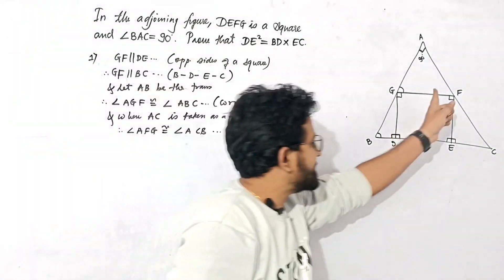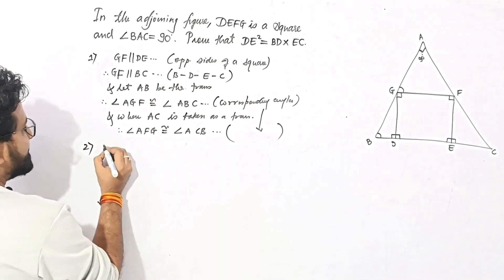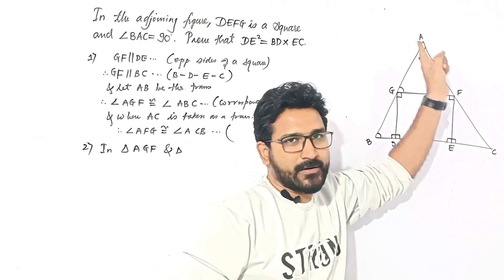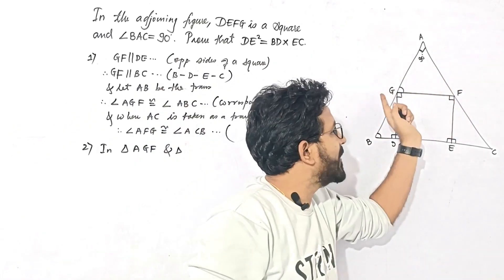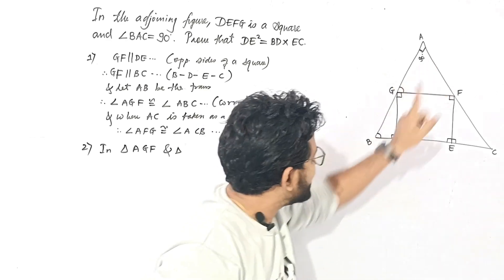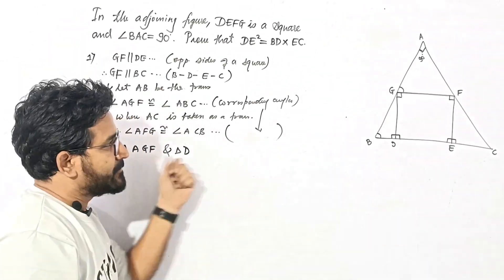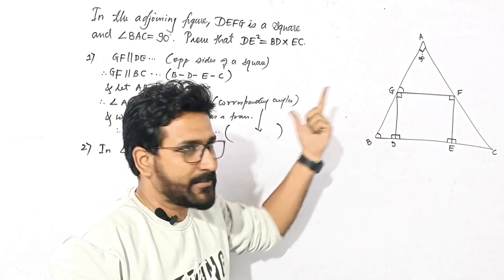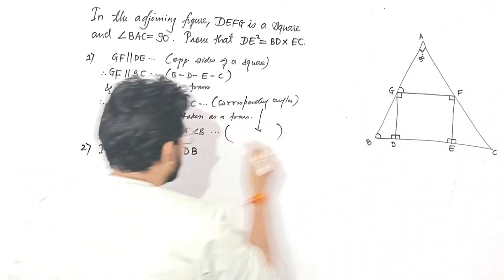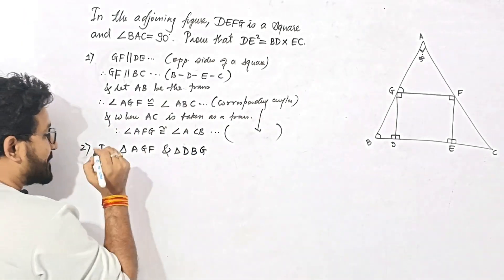These are corresponding angles — this angle and this angle are equal. Now in triangle AGF and triangle DBG, we write the names by correspondence. Angle A corresponds to angle D, G corresponds to B. So the second triangle's name is DBG. This correspondence naming is necessary — if we write the name incorrectly, the ratio will be wrong.